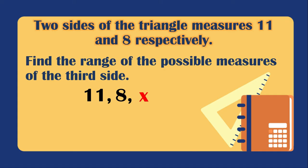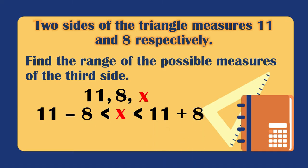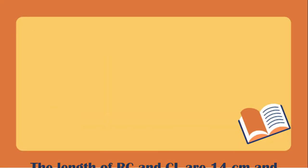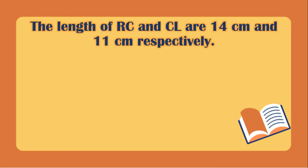We find the range — the highest and lowest possible values for the third side x. The third side x must be greater than the difference of the two sides: 11 minus 8, and less than the sum of the two sides: 11 plus 8. Simplifying, x is greater than 3 but less than 19.